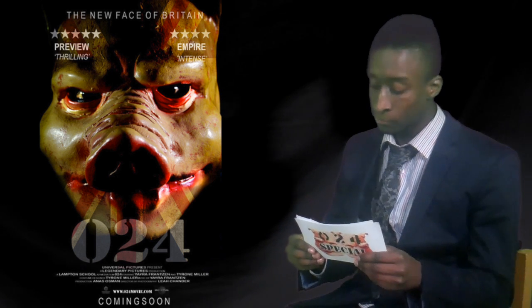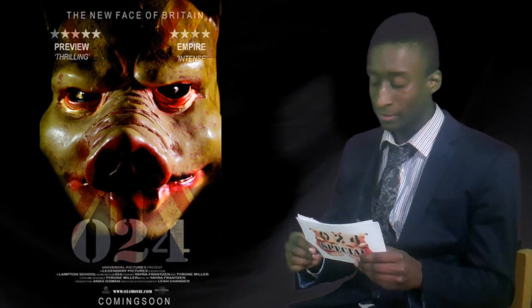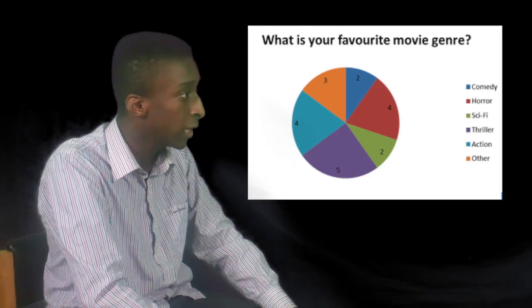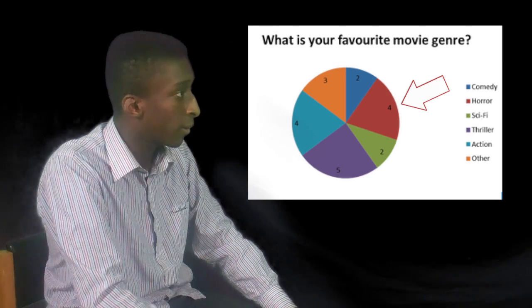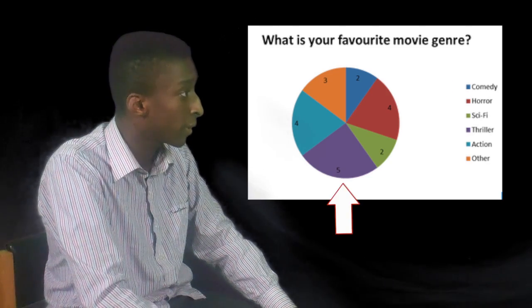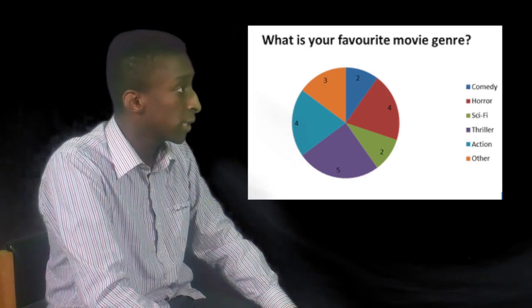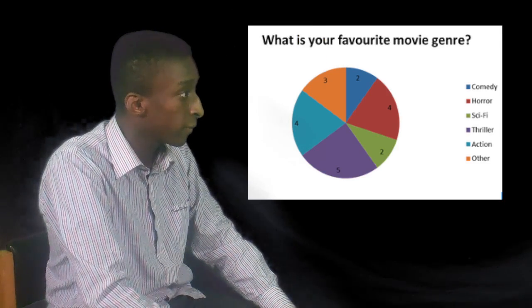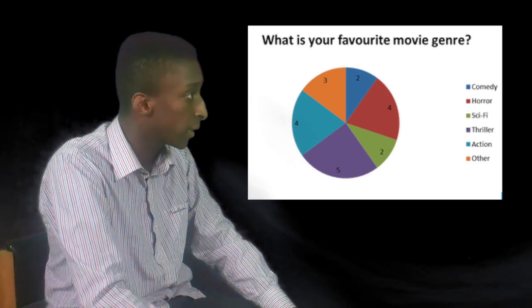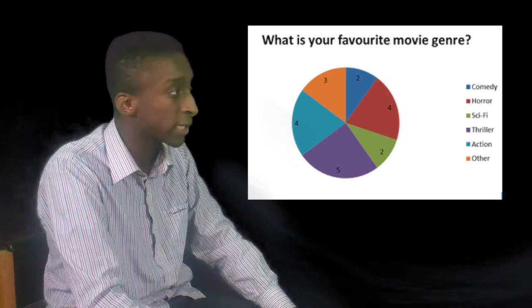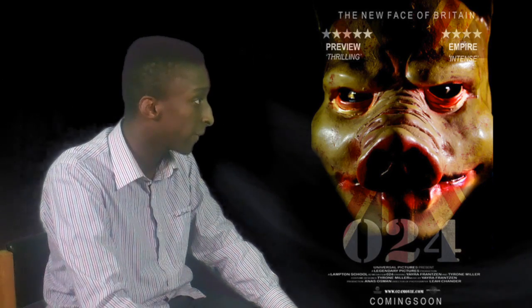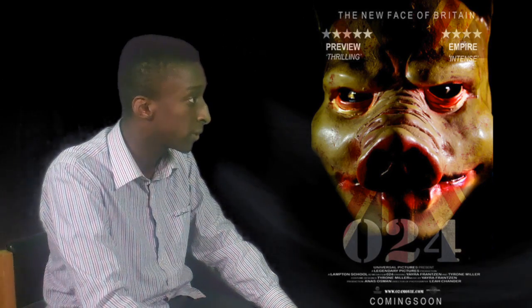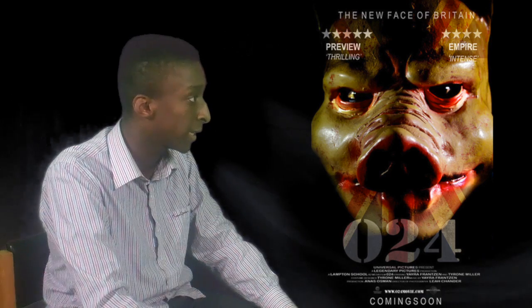So your genre was political horror — how did you come about deciding on that genre? When asked the question, what is your favourite movie genre, we gave the audience an option of six. These genres were horror, action, thriller, sci-fi, and other. The three highest scores were thriller with five, and action and horror with a score of four. After conducting this, we would then have to see how the connection of these genres would help us build an idea.